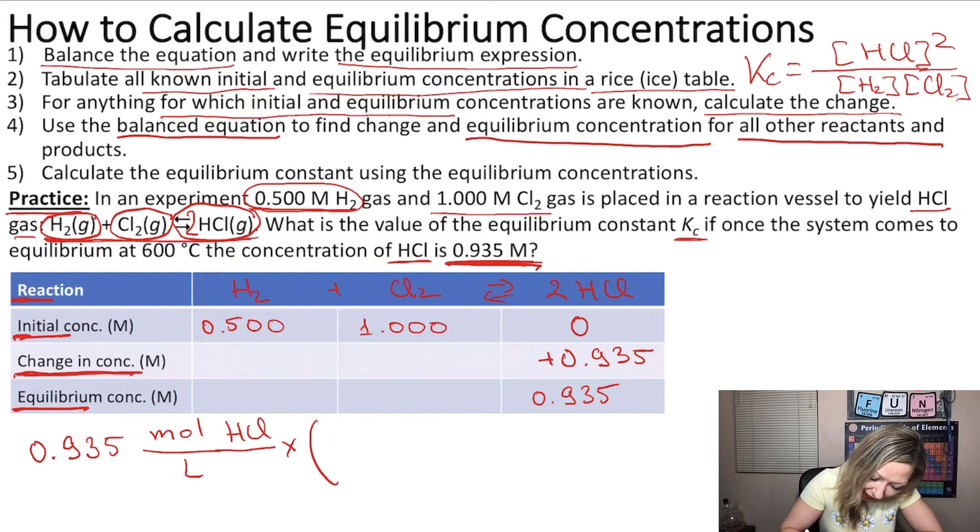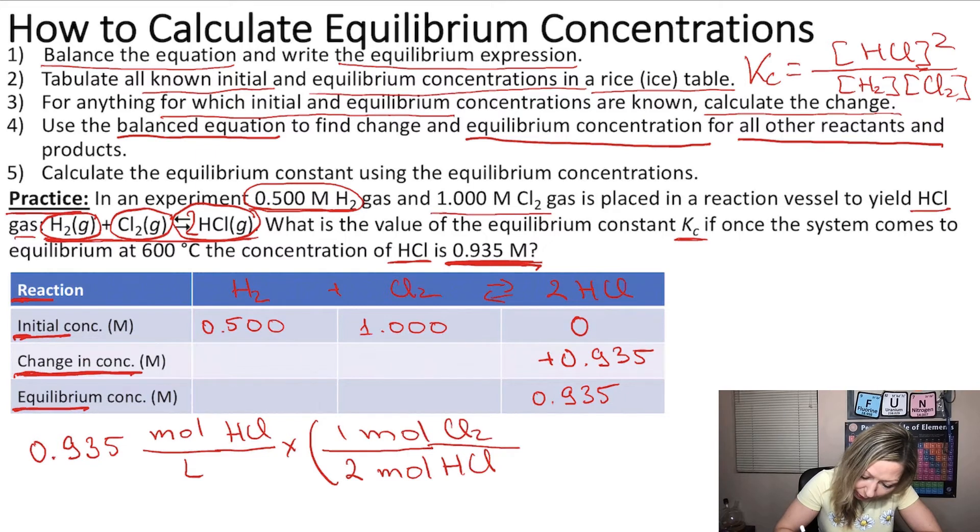Because in the reaction, I have for each mol of Cl2, 2 mols of HCl. So the 2 mols of HCl is going to be on the bottom and the 1 mol of Cl2 on top. So these are going to cancel out.